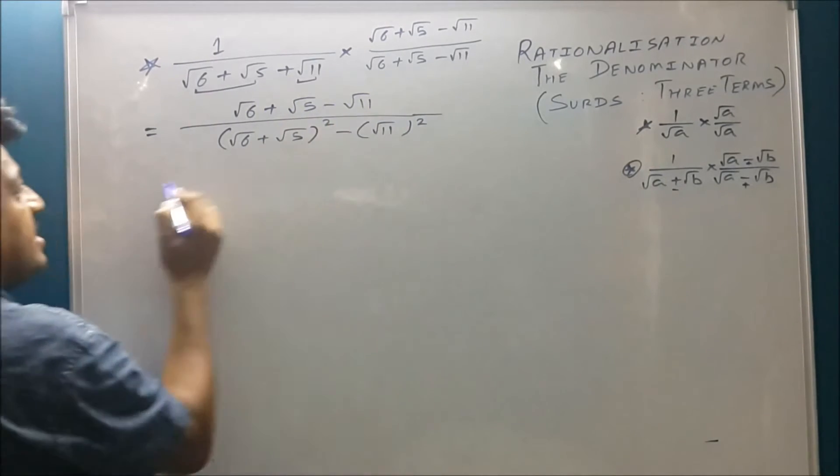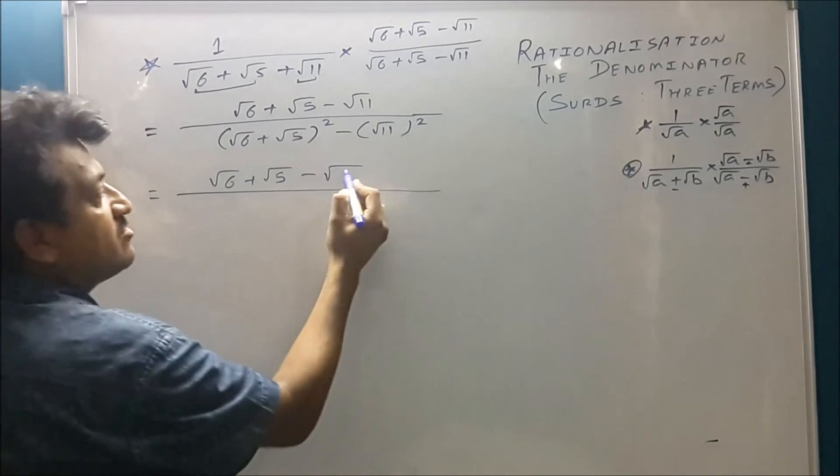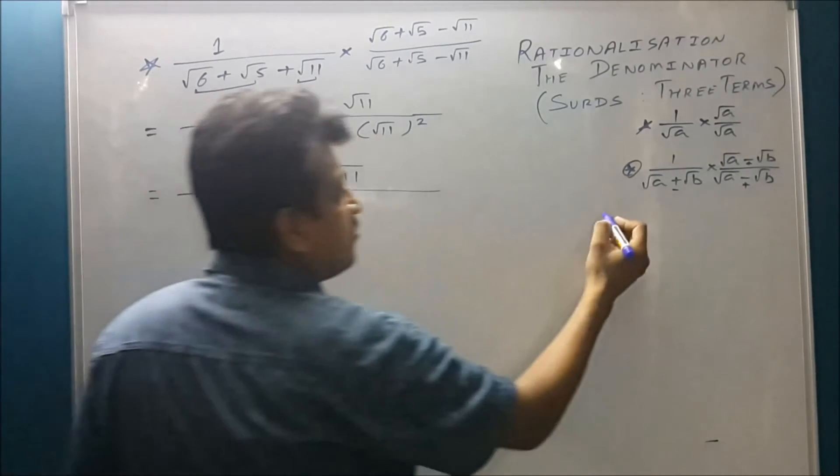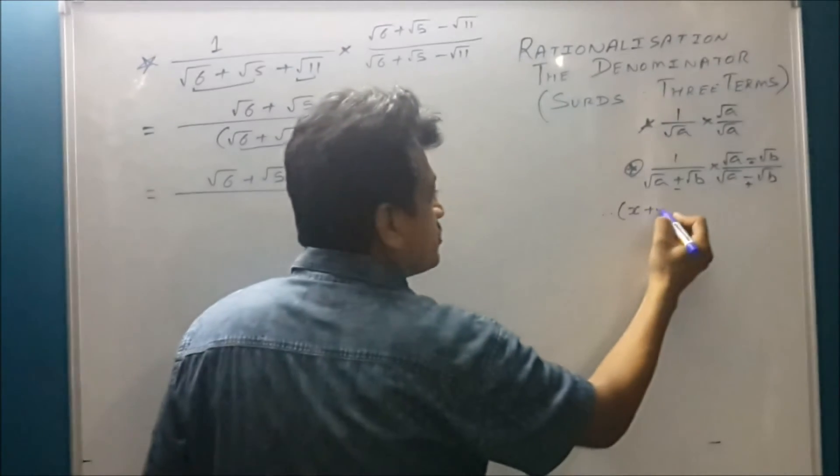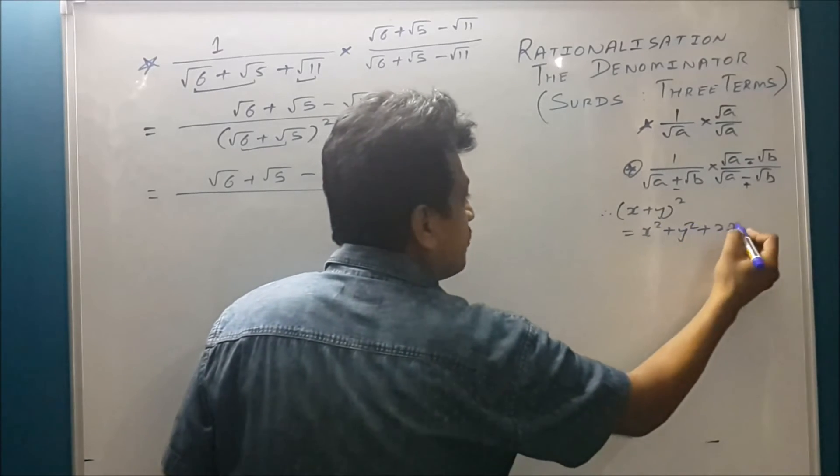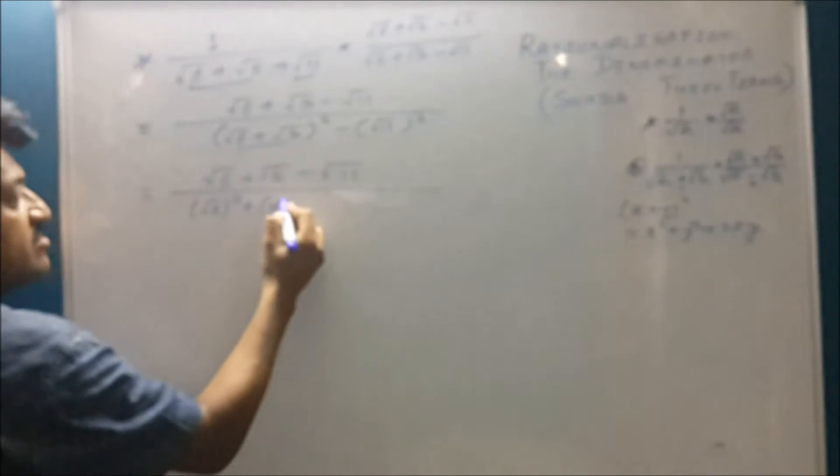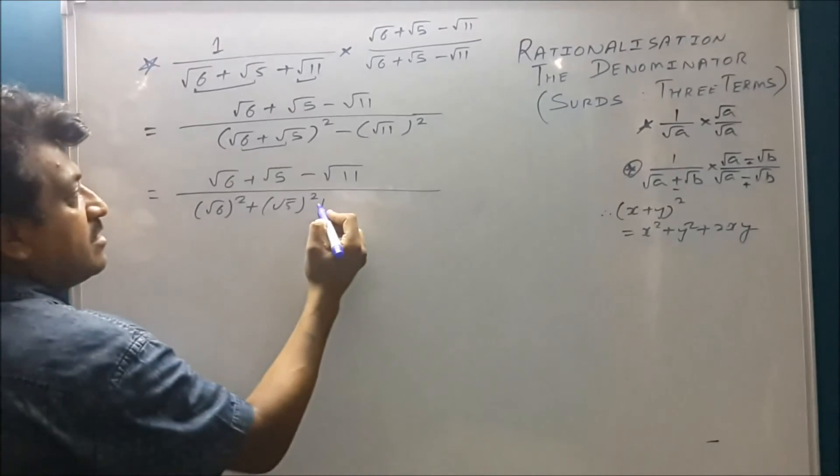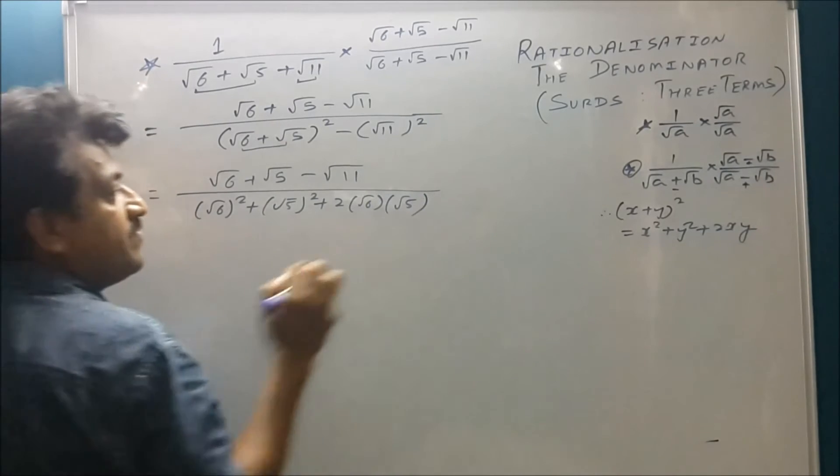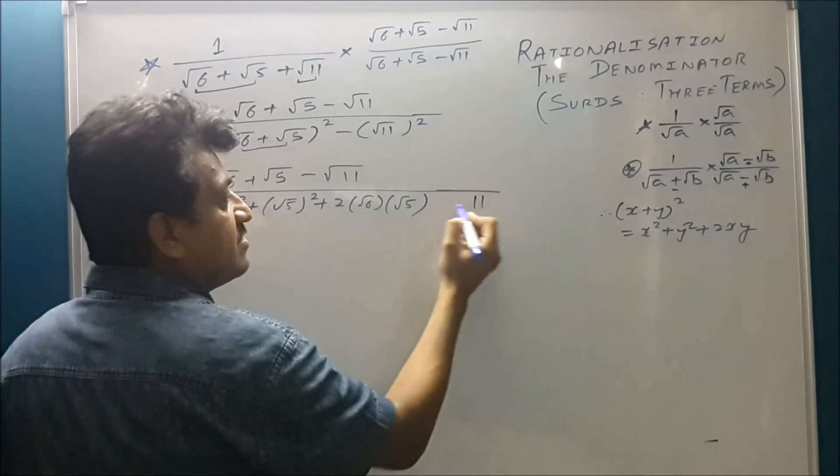So we write the numerator root 6 plus root 5 minus root 11. Now this is x plus y whole square. What is x plus y whole square? That is x square plus 2xy. So this is root 6 square plus root 5 square plus 2 root 6 root 5. Now this part, root 11, root 11 square is 11.